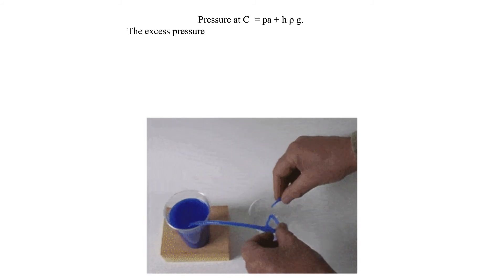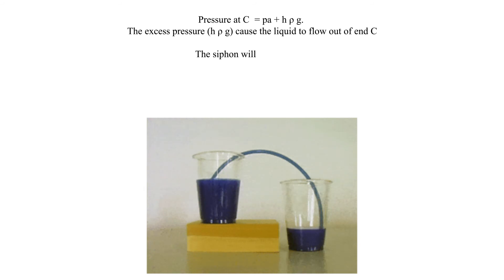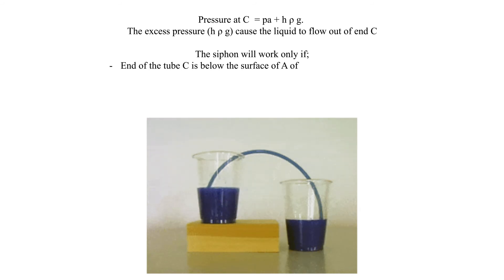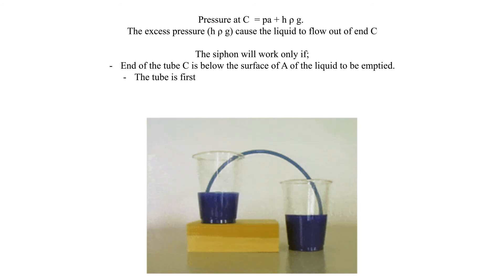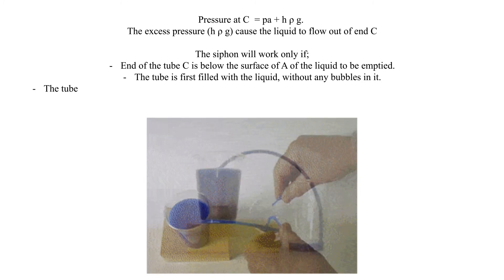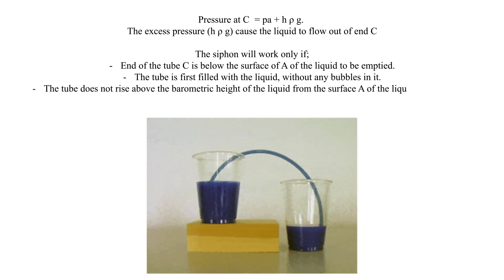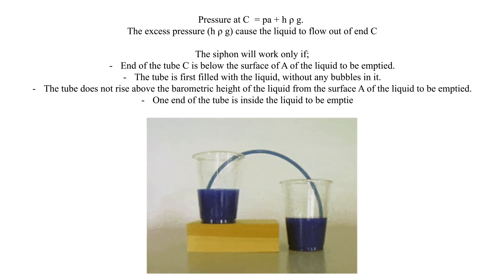The excess pressure, H·ρ·g, causes the liquid to flow out of C. The siphon will work only if: end C of the tube is below the surface A of the liquid to be emptied; the tube is first filled with the liquid without any bubbles in it; the tube does not rise above the barometric height of the liquid from the surface A of the liquid to be emptied; and one end of the tube is inside the liquid to be emptied.